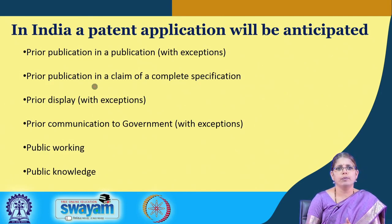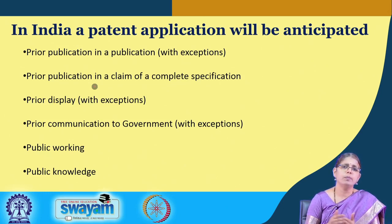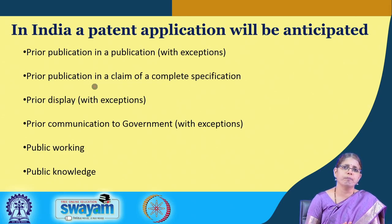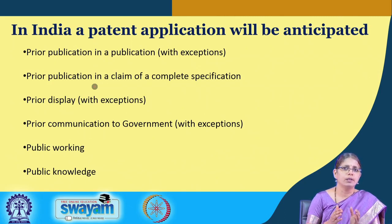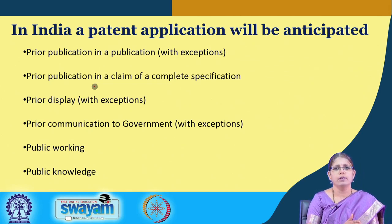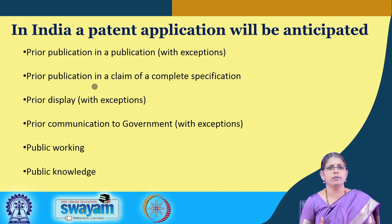The second category is what we call prior publication in relation to the claims of a complete specification. Publications can come in two categories: one is patent literature and the other is non-patent literature. When we say prior publication by claim of a complete specification, we mean the prior publication is a patent application. So if there is already a prior patent which discloses the same invention, then your invention is no longer novel.